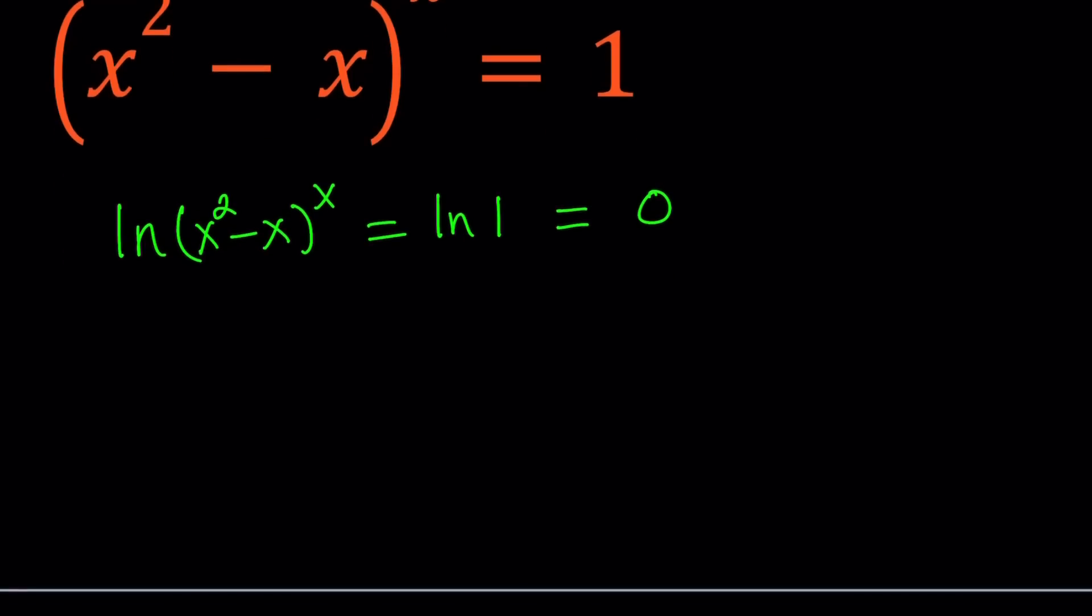Now by using properties of logs we can go ahead and bring this down. And we get x times natural log of x squared minus x equals 0.